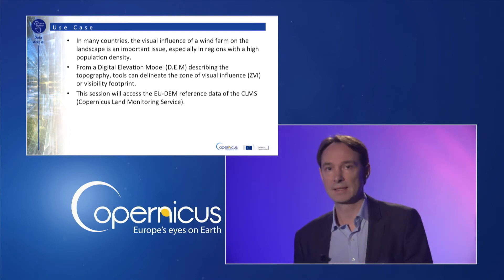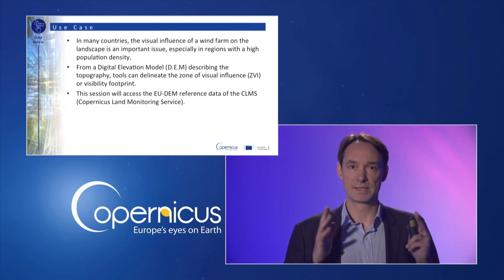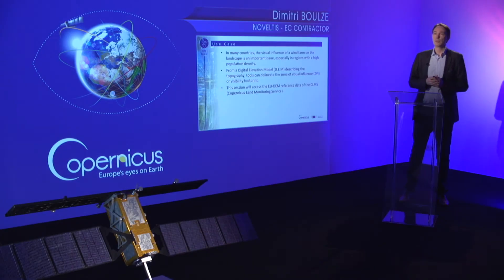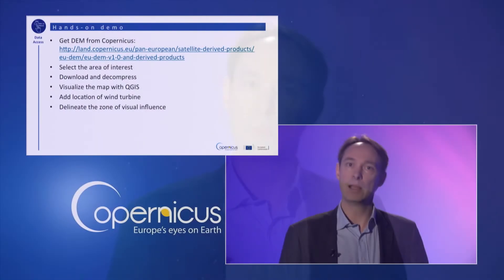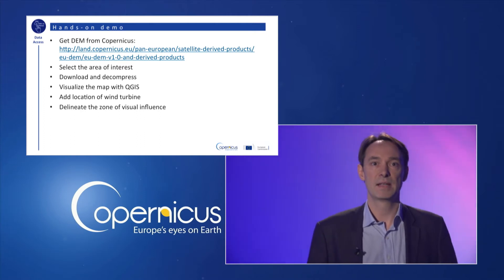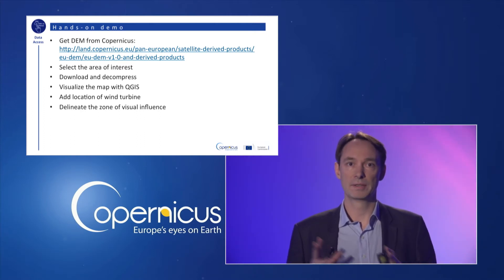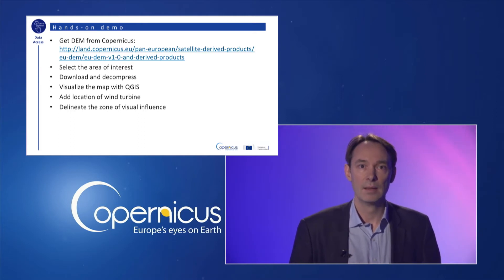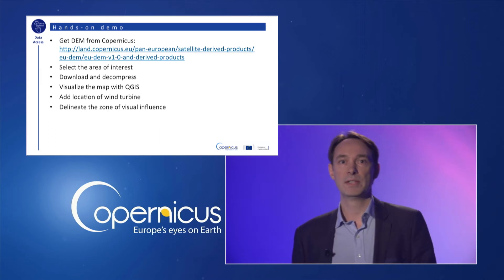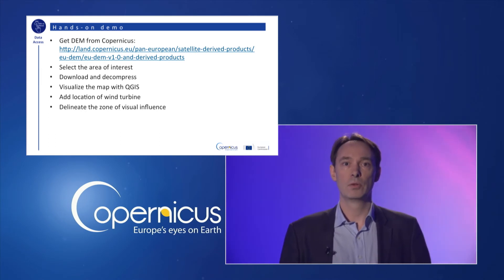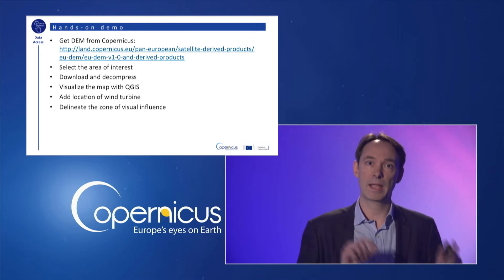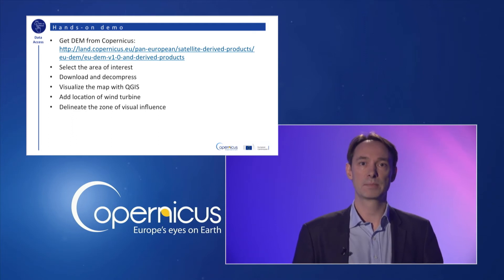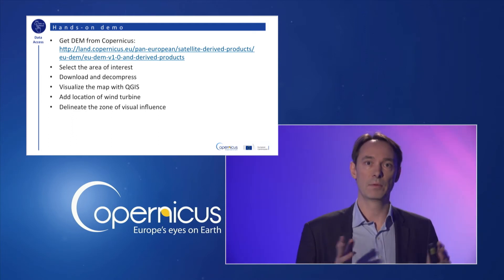This module shows you how to access the European digital elevation model reference data from the Copernicus Land Monitoring Service. Access to this data is free but limited to registered users, so if it's your first time, you will have to register over the website of the European Environmental Agency. This module is organized in two steps: the first video presents how to get the EU DEM data, select the area of interest, and download and decompress the files. The second one shows how to visualize the map and locate wind turbines and delineate the zone of visual influence using the open source GIS, QGIS.